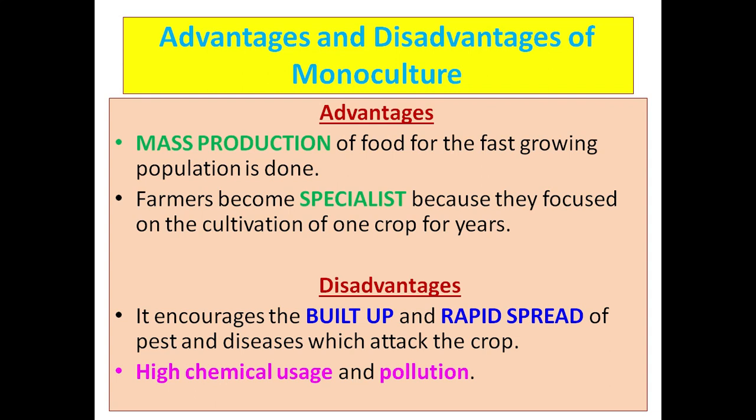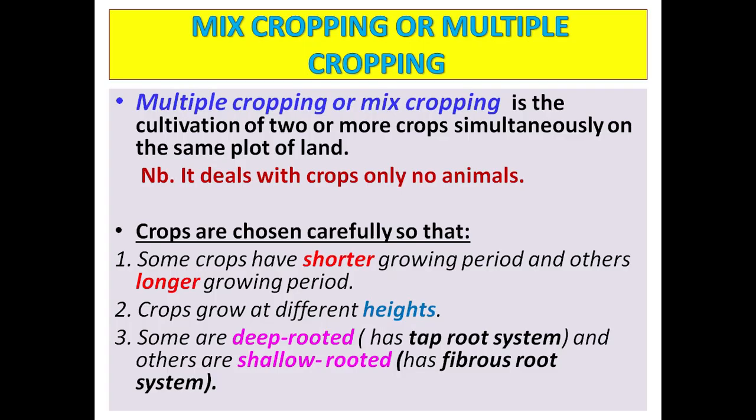The disadvantages of monoculture: it encourages the build-up and rapid spread of pests and diseases which attack the crop. Pests get used to the area and build their population around it, feeding on those plants. The second point is high chemical usage and pollution, because farmers tend to use chemicals to combat pests, and over time that results in pollution.